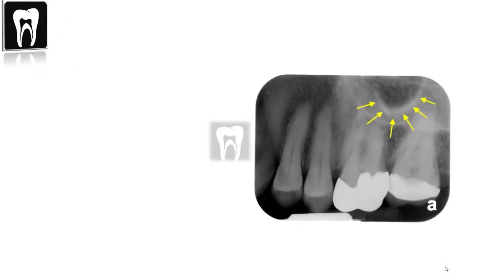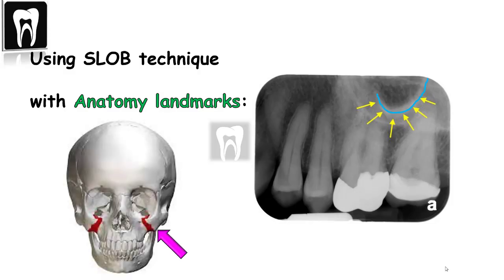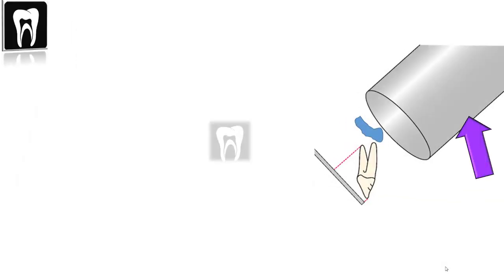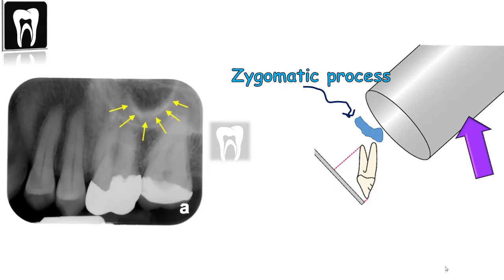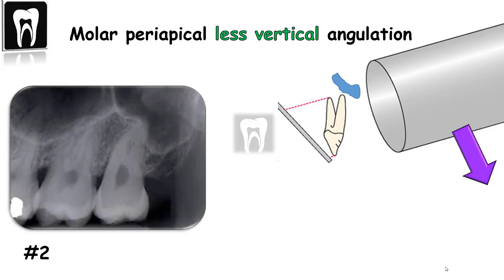You can also use this technique with anatomic landmarks — comparing anatomy that could be displaced when changing the horizontal or vertical angulation. In this radiograph, you can see the inferior border of the zygomatic process of the maxilla superimposed on the maxillary molars. Knowing that this structure is buccal to the teeth, when I increase the vertical angulation, the zygomatic process moves in the opposite direction of the tube and becomes superimposed on the maxillary molars. To correct this and move the zygomatic process away from the maxillary molars, I decrease the vertical angulation — and on the second radiograph, you can see that with decreased vertical angulation, the zygomatic process is no longer superimposed on the maxillary molars.